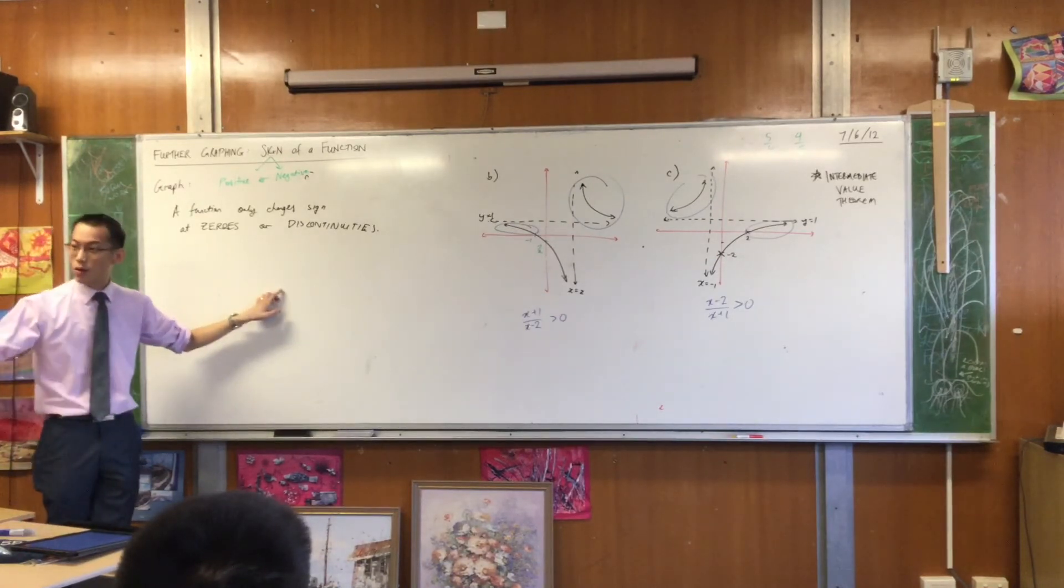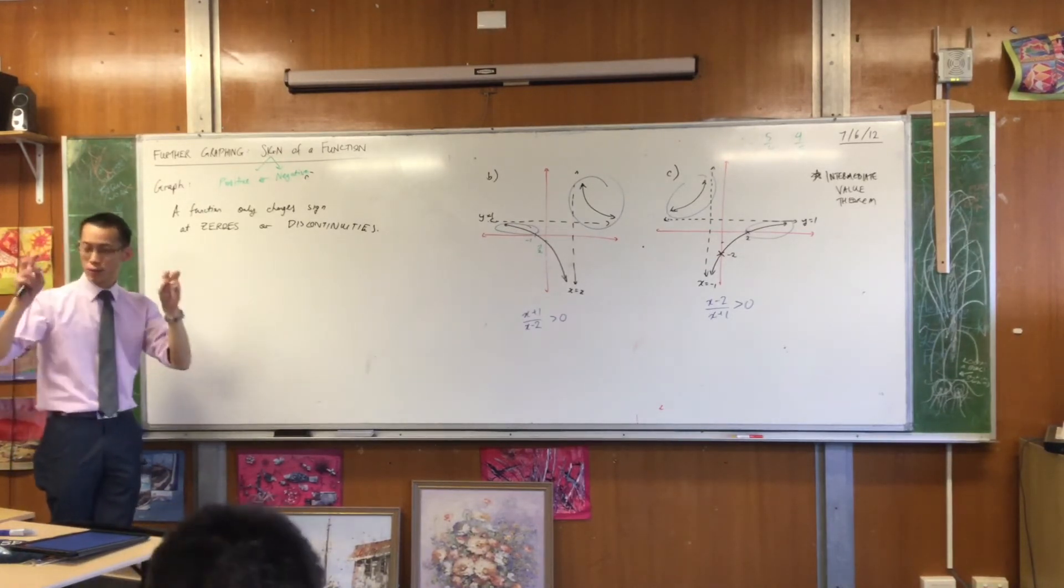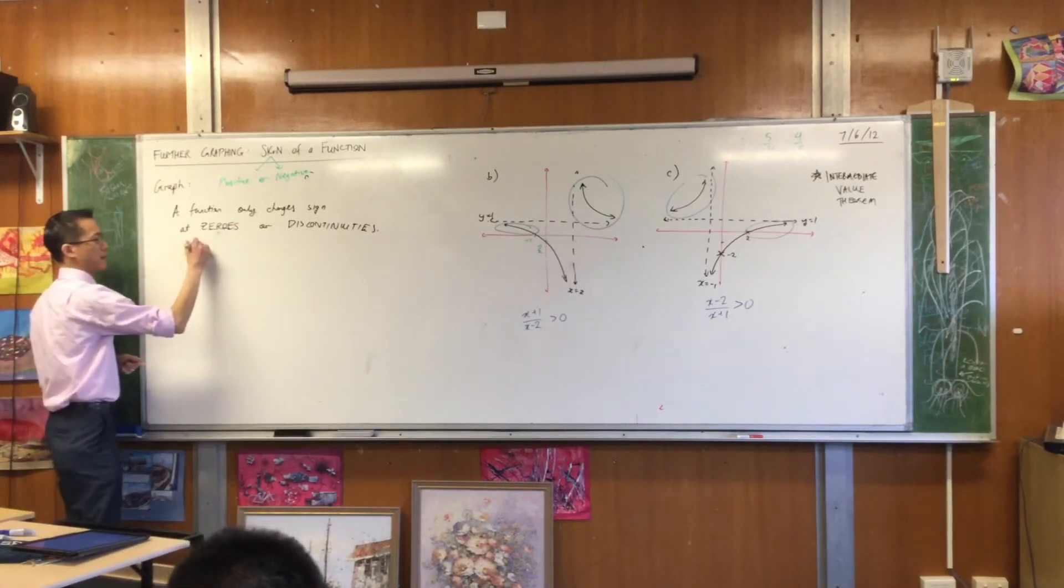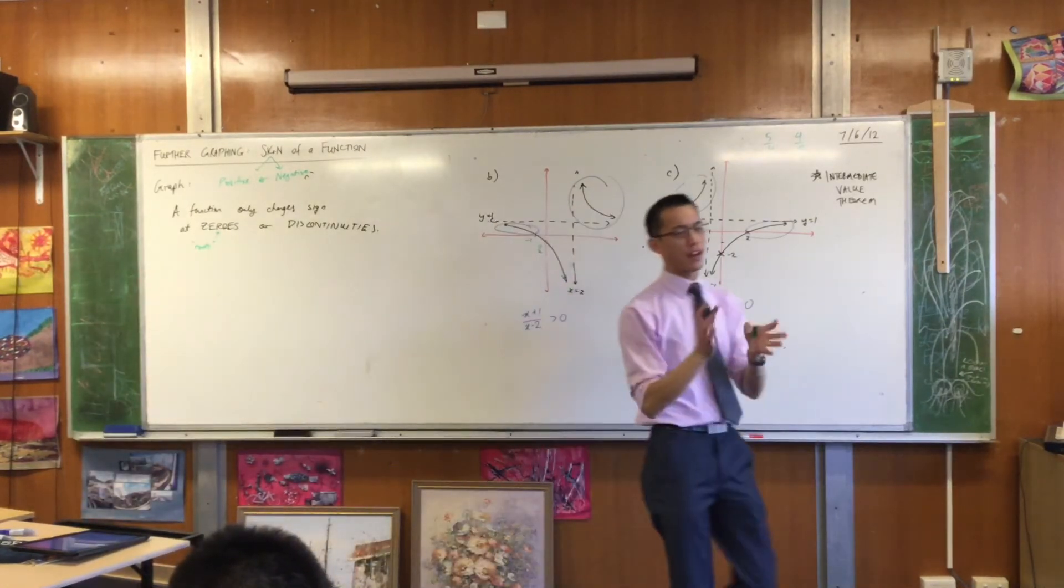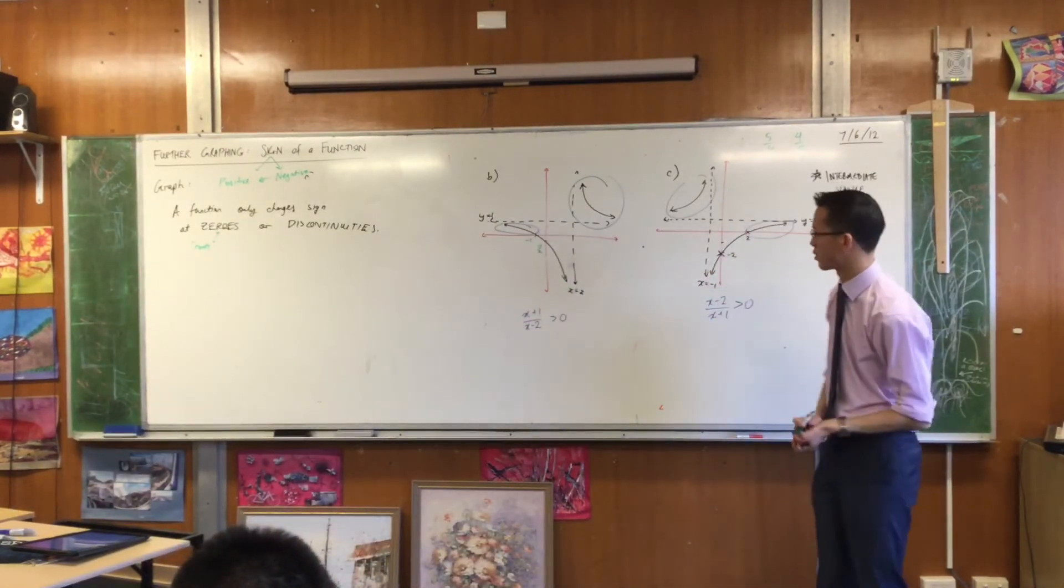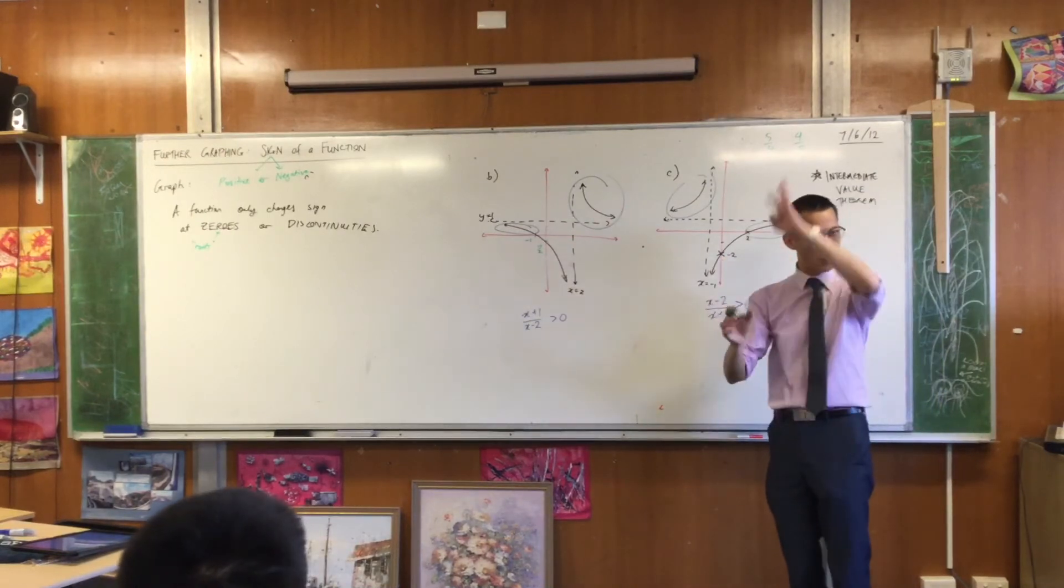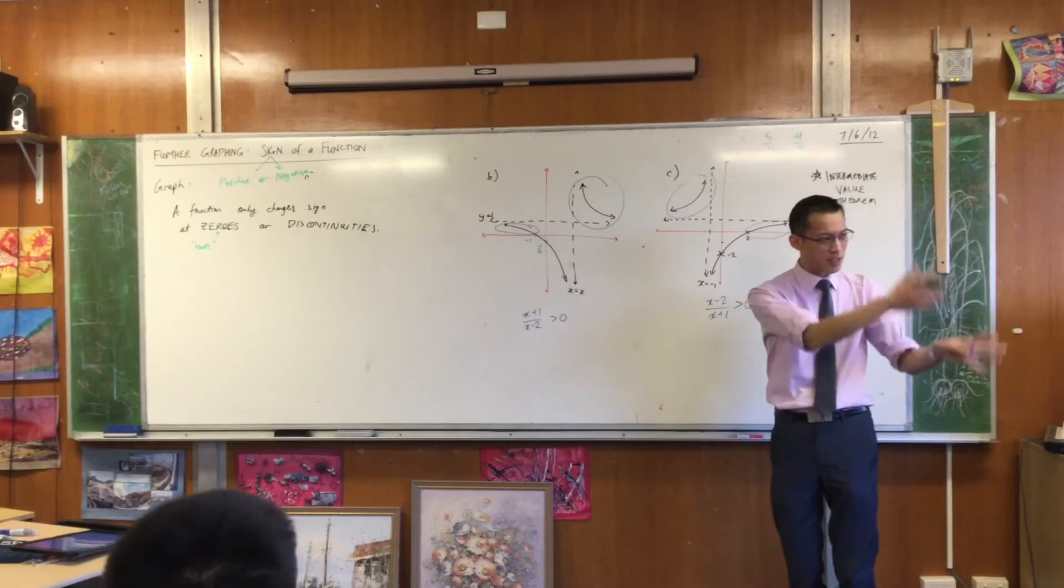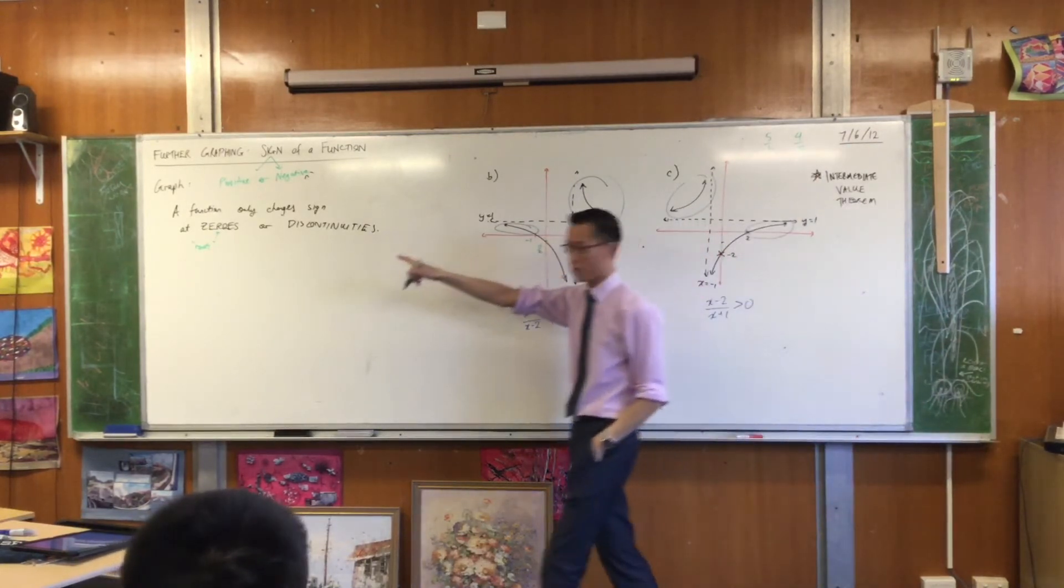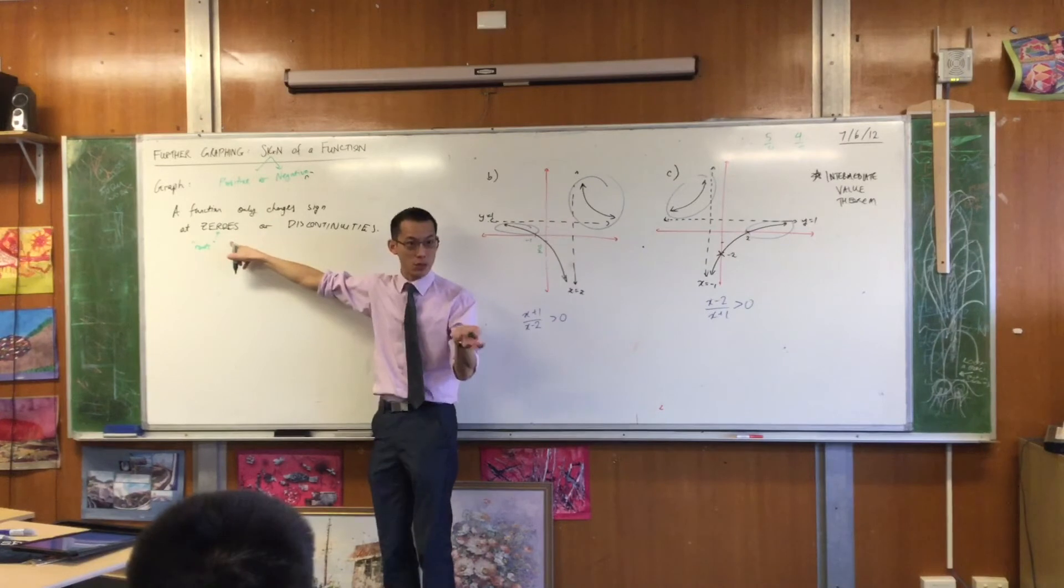Zeros. So, you've so far been calling these roots. Roots is a very general word. We tend to only use it when we talk about polynomials. So, the parabola, that is x squared plus other stuff. A cubic, x cubed plus other stuff, or x to the 4, x to the 5. Those things have roots, where the function is equal to zero.